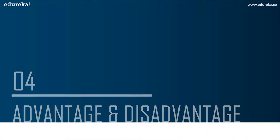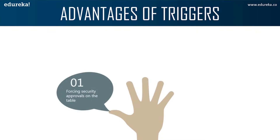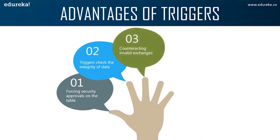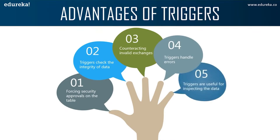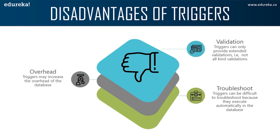Let's look at the advantages and disadvantages of triggers. Advantages include: forcing security approvals on database tables, providing another way to check data integrity, counteracting invalid transactions, handling errors from the database layer, and being useful for inspecting data changes in tables. Disadvantages include: triggers only provide extended validation — simple validations like NOT NULL, UNIQUE, CHECK, and FOREIGN KEY constraints cannot be used inside a trigger. Triggers may also increase database overhead, and they can be difficult to troubleshoot because they execute automatically and may not be visible to client applications.